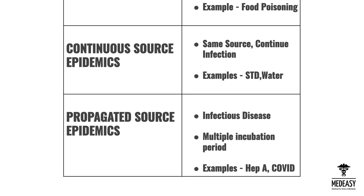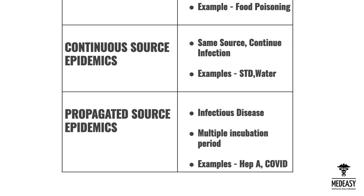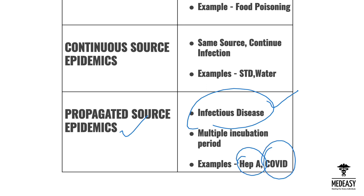The third type is propagated source epidemic. In this type, infectious diseases involve multiple incubation periods. Examples include Hepatitis A and COVID-19. It spreads from one person to another person, which is why it is called a propagated source epidemic.